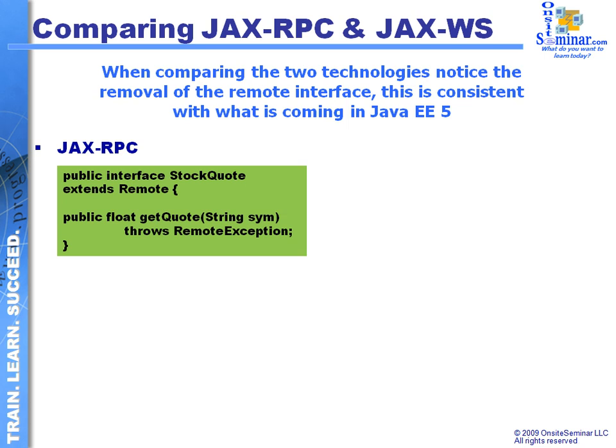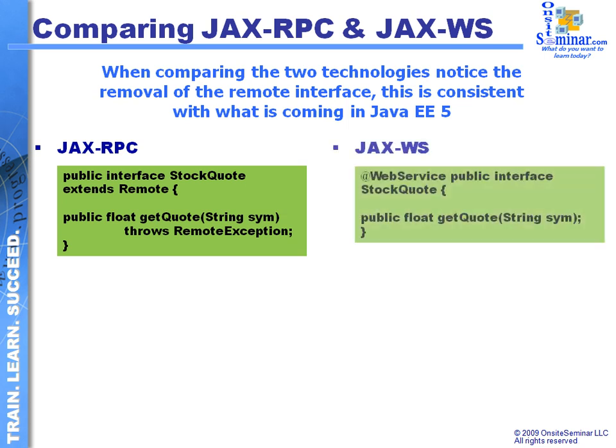Looking at it from the JAX-RPC perspective, we see the ability to create interfaces that work with the remote concept — it's extending Remote. The method we're implementing inside the interface, this getQuote method, is going to be generating a remote exception. So this is consistent with the concept of using remote procedure call types of development.